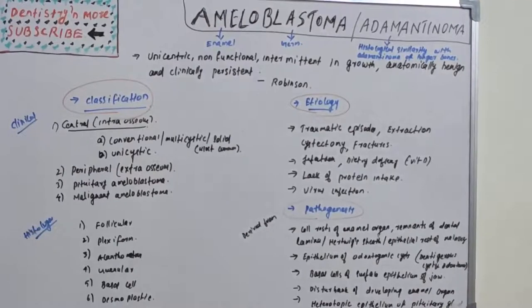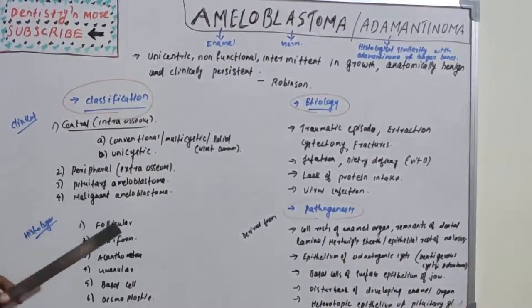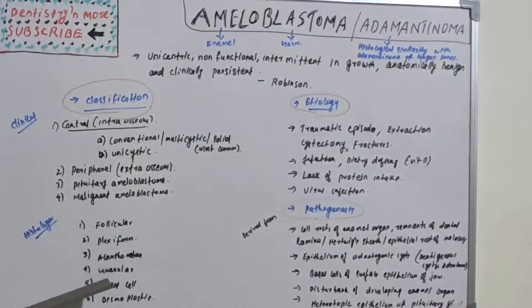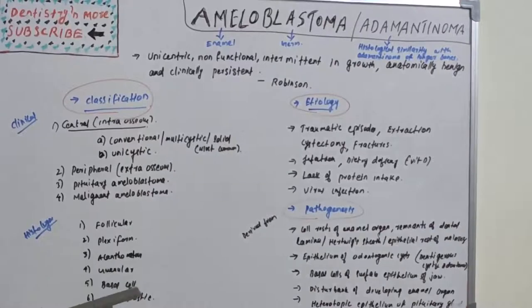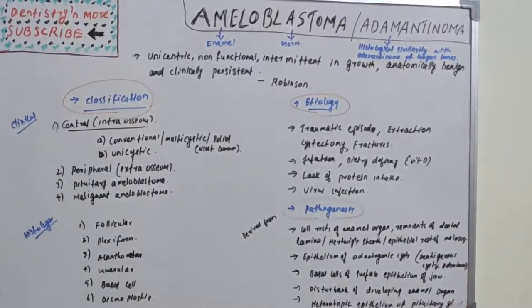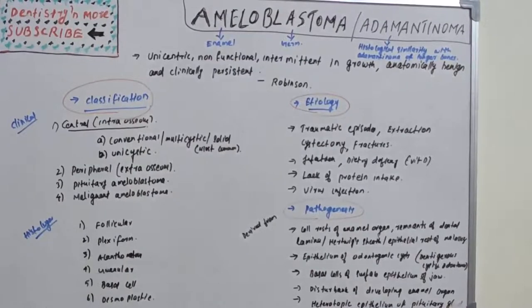In histological classification, types are based on histological appearance: follicular, plexiform, acanthomatous, granular, basal cell, and desmoplastic.